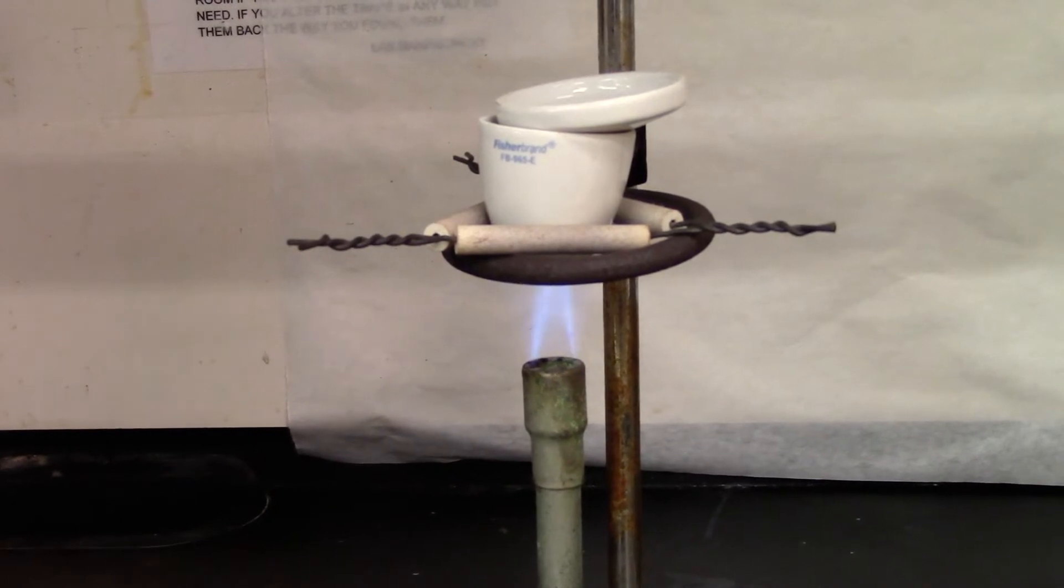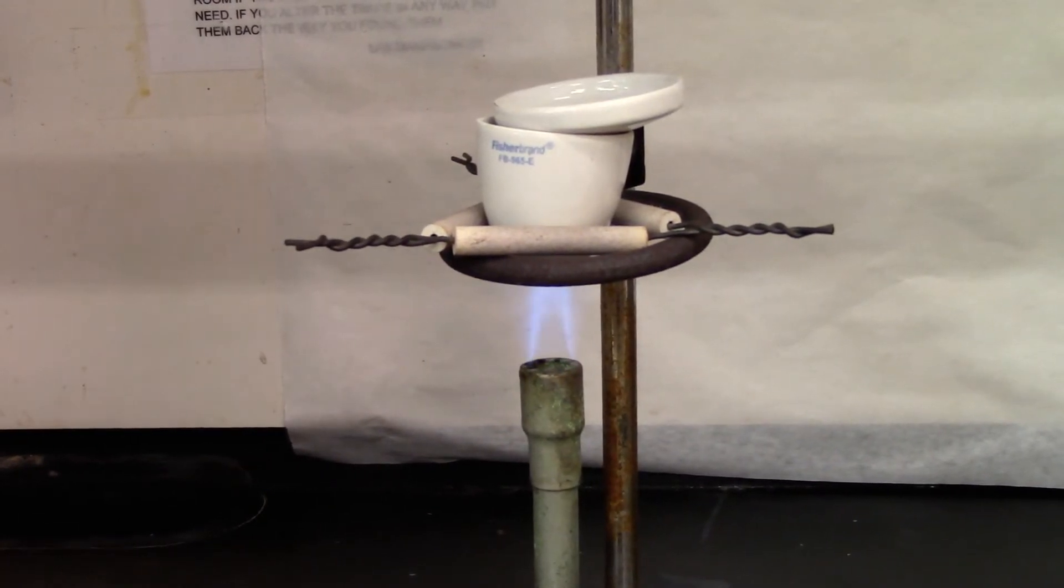So if you see the tip of the inner cone should be close to the bottom of the crucible so the heating is strong. So now I'm going to let it heat for about 10 minutes.